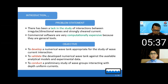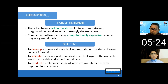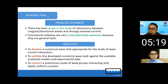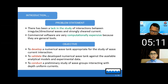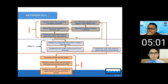Therefore, our objectives are: first, to develop an efficient numerical wave tank to study wave-current interaction — similar to the experimental wave tank shown earlier but numerical and efficient so it doesn't take long; second, to validate the model we have developed; and third, to conduct cases of the interaction between waves and currents and see how things develop.